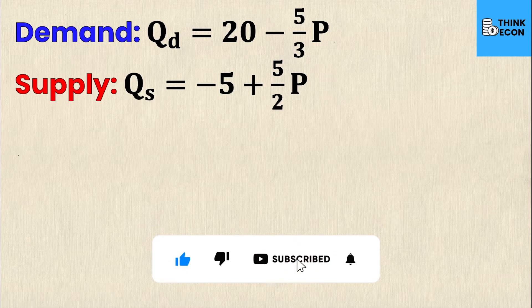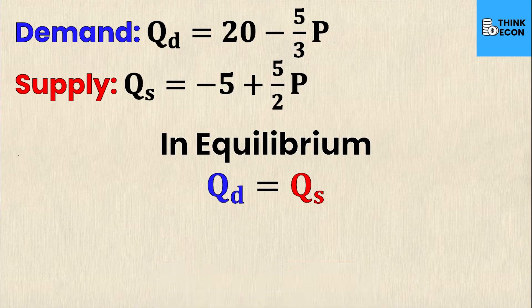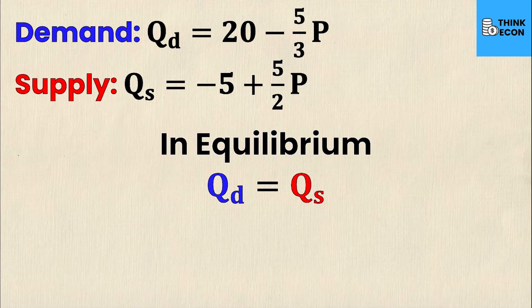The most important part to remember is that in equilibrium quantity demanded is equal to quantity supplied. This is the point where the two curves, the supply curve and the demand curve, cross over one another on a graph. But we don't want to do any graphing, we just want to do this calculation algebraically. The most important first step is to set these two equations equal to one another.